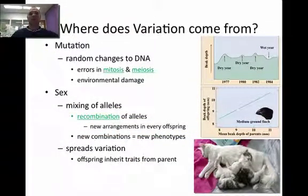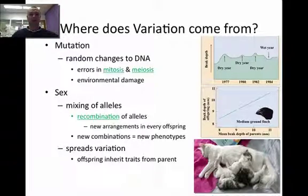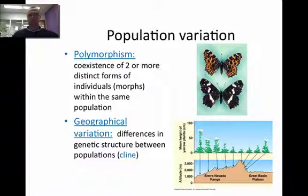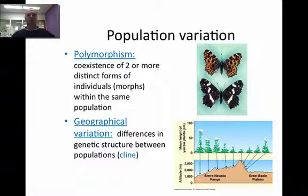Where does variation come from? Variation comes from mutations, such as changes in DNA through either an error in mitosis or meiosis, or maybe environmental damage. It can also come through sex, in which you have a mixing of alleles through recombination. When we talk about population variety, you'll often hear the word polymorphism — poly means many, and morphism means there's going to be more than two different types occurring, like these butterflies. They could be the same species but have different colorations or morphs. It could also be geographic variation, in which the same organism, depending on where it's found geographically, might look differently — like a squirrel on one side of a canyon versus the other might be darker in color.